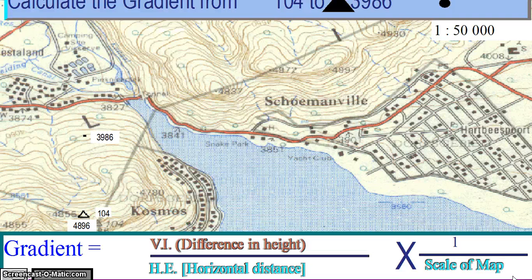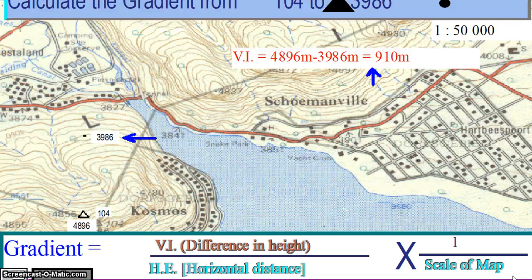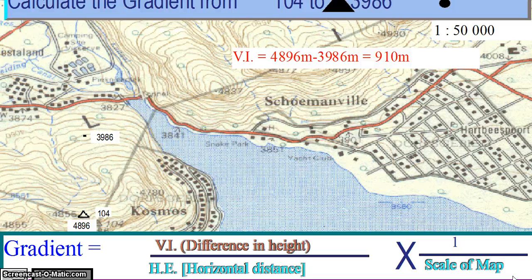First, calculate the difference in height between the two points. The height of the trig beacon is 4,896 meters. The height of spot height 3986 is 3,986 meters. The difference in height between trig beacon 104 and spot height 3986 is therefore 910 meters.